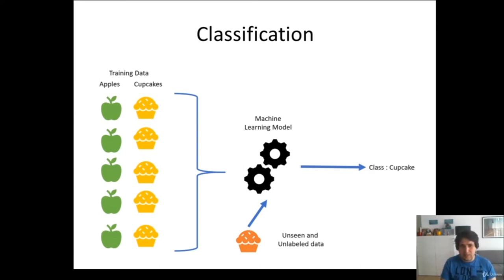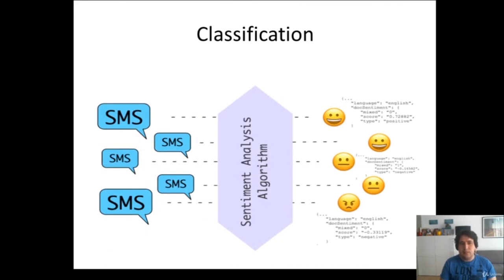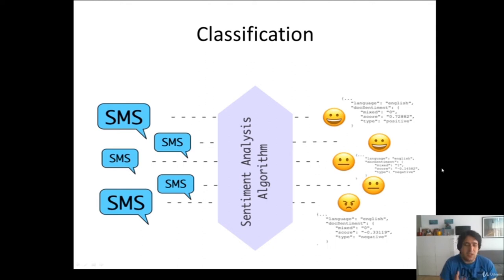Here is one example of classification — sentiment analysis for SMS messages. You have a stream of SMS messages and the classifier would score each one: whether it is a positive message, what language it is in, whether it is neutral, or whether it is angry or negative. That is one example of classification.